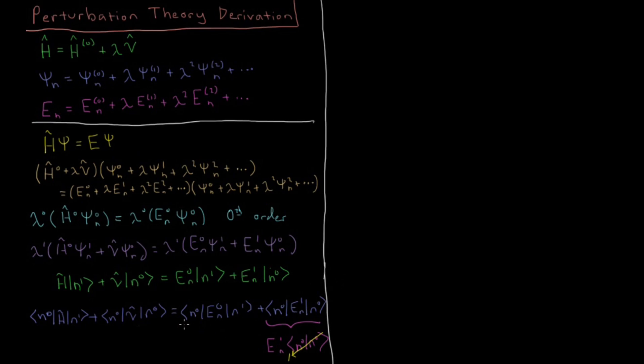So this term here, we can pull out the E0n, and we just get the integral of n star 0, n1.